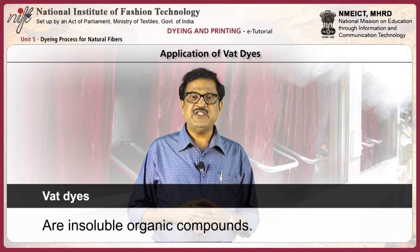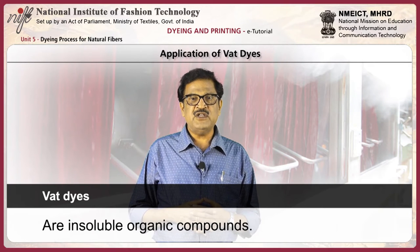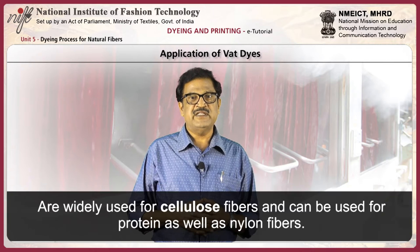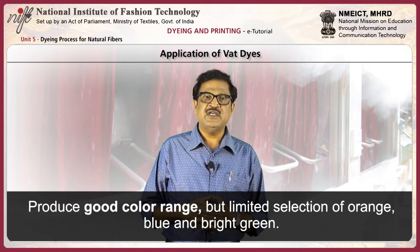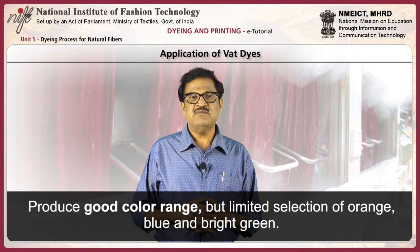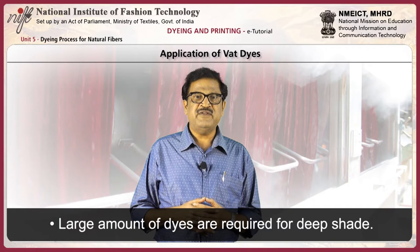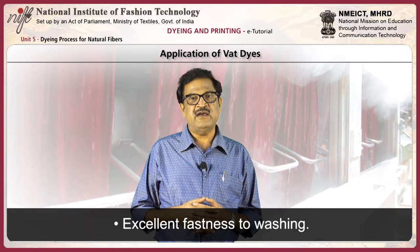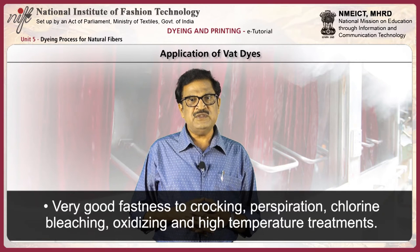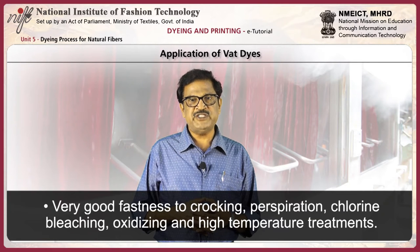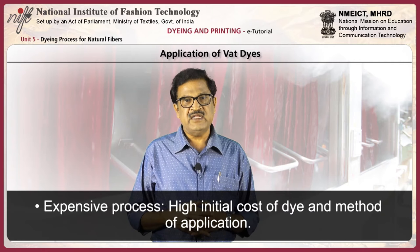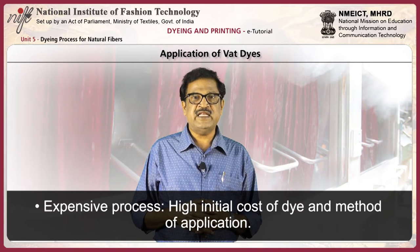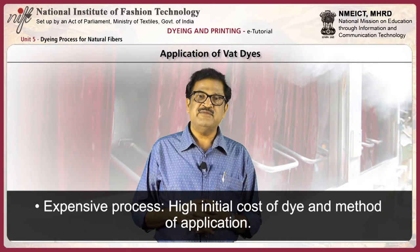Next, we will discuss the application of vat dyes. Vat dyes are insoluble organic compounds widely used for cellulose fibers and can also be used for protein fibers and nylon fibers. They produce a good color range but have limited selection of orange, blue, and bright green. Large amounts of dye are required for deep shades. They have excellent fastness to washing, and very good fastness to crocking, perspiration, chlorine bleaching, oxidizing, and high temperature treatments. However, this is an expensive process due to high initial cost of dye and method of application.